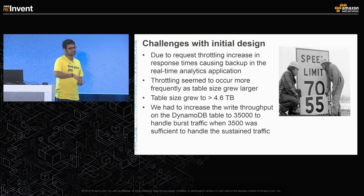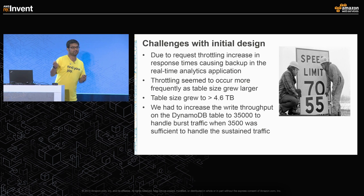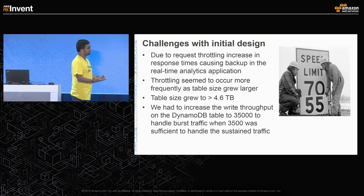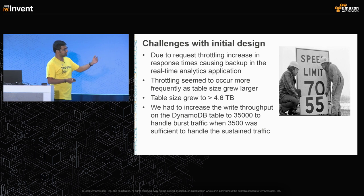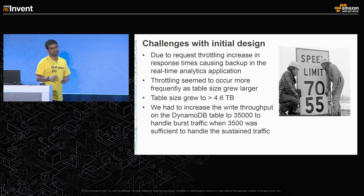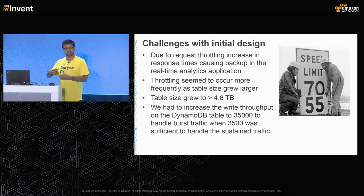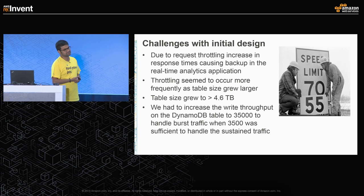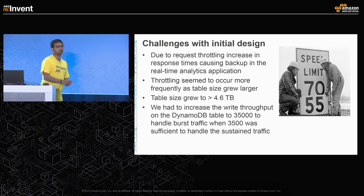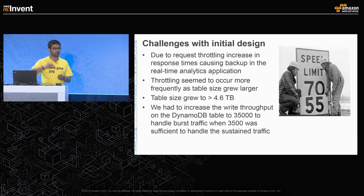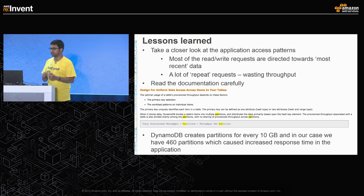To mitigate throttling we started increasing the write throughput, which resulted in significant cost — we increased it to 35,000 whereas the sustained write throughput was only 3,500. Even after that change we were still seeing many requests throttled. The throttling happened as the table size grew — that single table is around 4.6 terabytes. We investigated why this was happening. DynamoDB creates a partition for every 10 GB, so at 4.6 TB we had 460 partitions. Amazon distributes the provisioned throughput equally among partitions, so each partition only received 75 as their throughput even though we had 35,000 total.